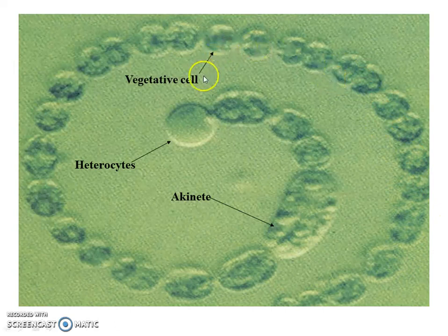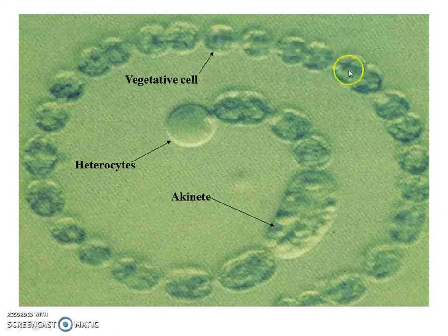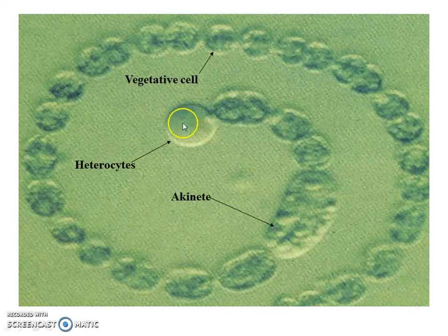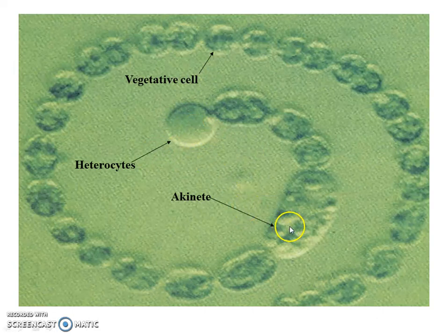The individual cells perform photosynthesis and are green in color — they are called vegetative cells. The slightly bigger cell is a heterocyst. The akinete is a thick-walled resting cell.